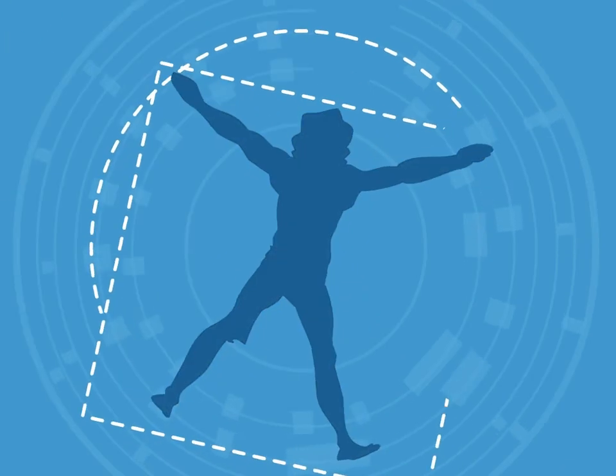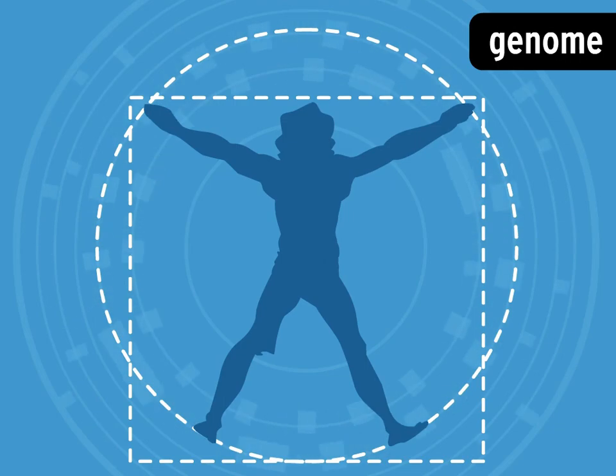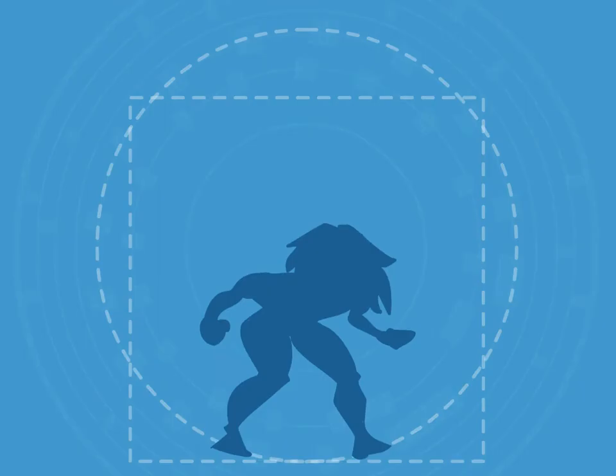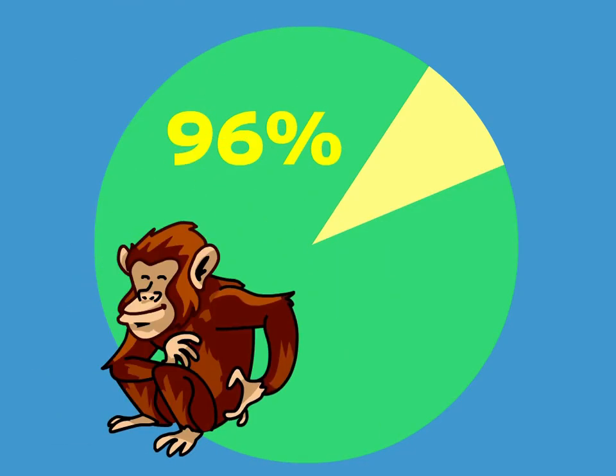Researchers have mapped the human genome, the complete sequence for human DNA. Comparing our genes to those of other life forms, we've discovered a lot in common. Humans share 96% of the same genes as chimpanzees. Which isn't too surprising.